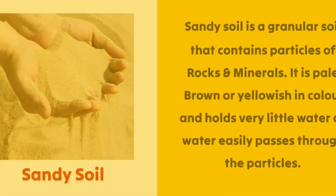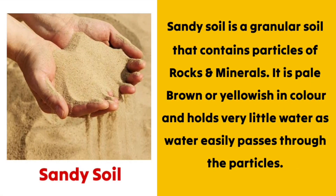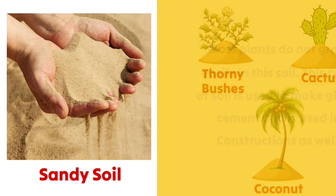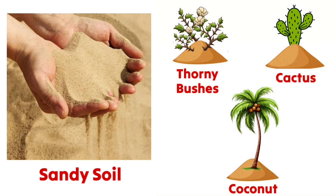Sandy soil is a granular soil that contains particles of rocks and minerals. It is pale brown or yellowish in color and holds very little water, as water easily passes through the particles. Most plants do not grow easily in sandy soil. This type of soil is used to make glass and cement, and is used in construction. Plants like cactus, coconut, or thorny bushes grow well in sandy soil.